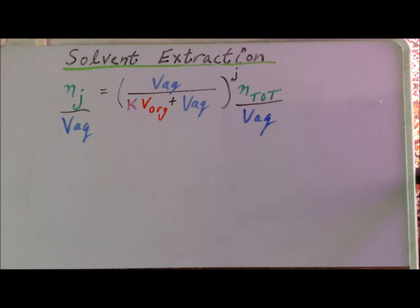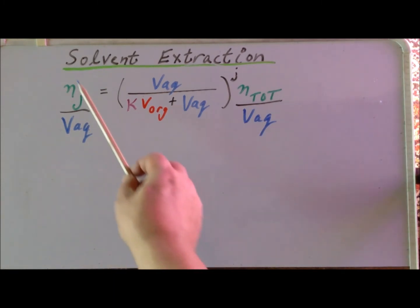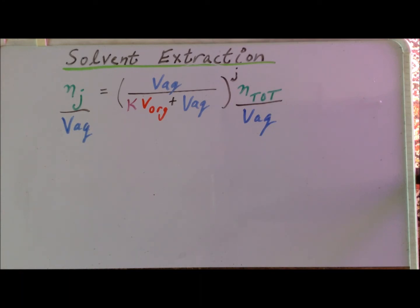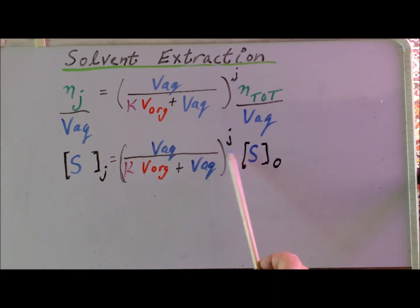We can derive yet another related expression simply by dividing each side of the equation by the volume of the aqueous phase. The expression on the left-hand side becomes the concentration of the solute remaining in the aqueous phase after j extractions, while N_total divided by V_aq is the original concentration of the solute in the aqueous phase. So our final result is that the concentration of the solute in the aqueous phase after j extractions is equal to this expression to the jth power times the original concentration.